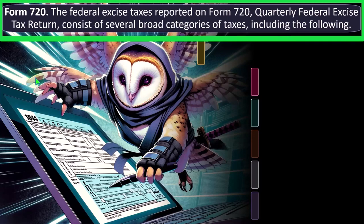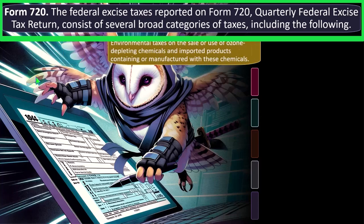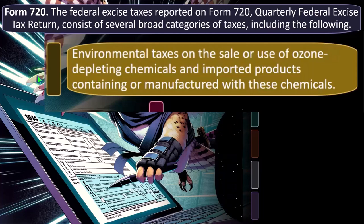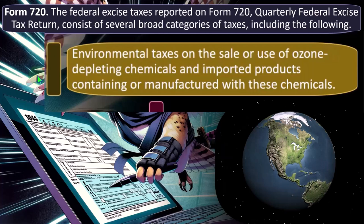Form 720, the quarterly federal excise tax return, covers several broad categories of taxes. One category is environmental taxes on the sale or use of ozone-depleting chemicals and imported products containing or manufactured with those chemicals. Before the current focus on carbon and CO₂ as the primary greenhouse gas, there was the earlier ozone layer crisis involving chemicals found in spray cans and similar products.